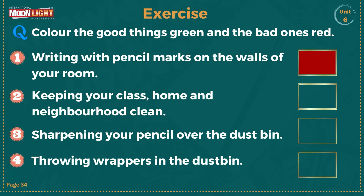Number two — keeping your class, home and neighborhood clean. Should we keep our home and school clean? Yes! We should always keep our home and surroundings clean, and always throw our garbage in the dustbin. For this one, color it green. Number three — sharpening your pencil over the dustbin. Is this a good habit or bad? Color it green — we should always sharpen our pencil over the dustbin.